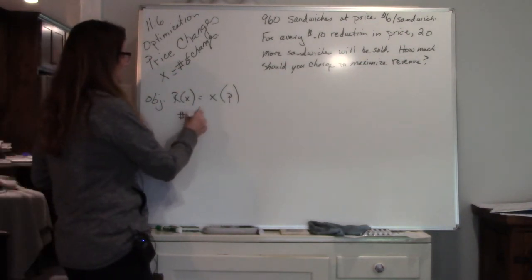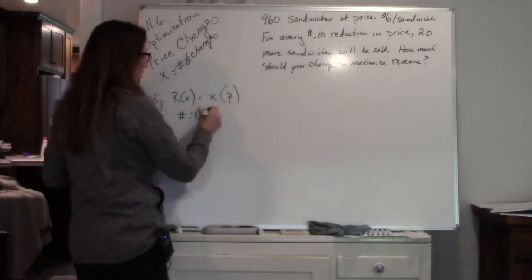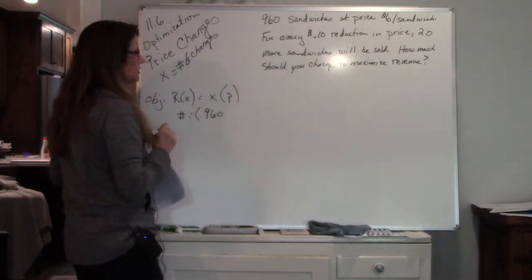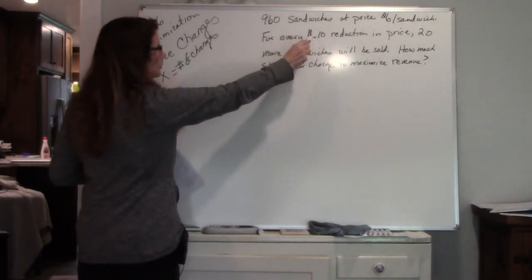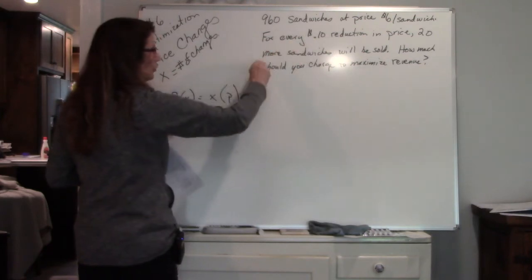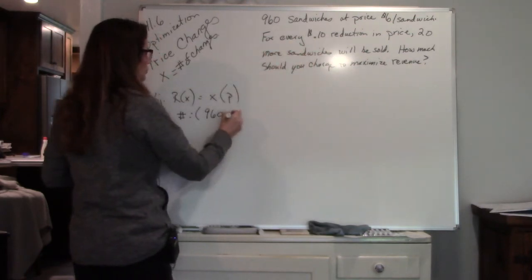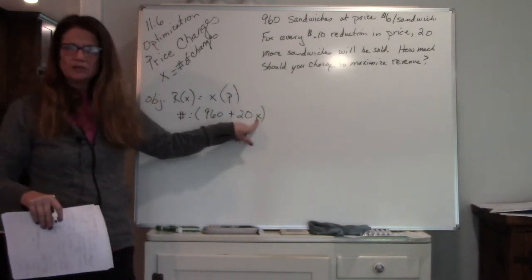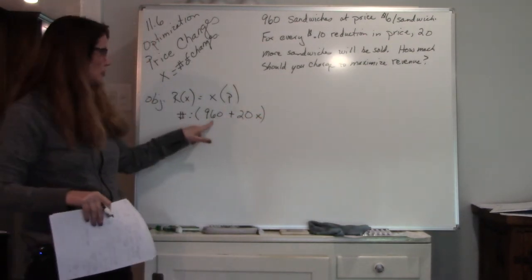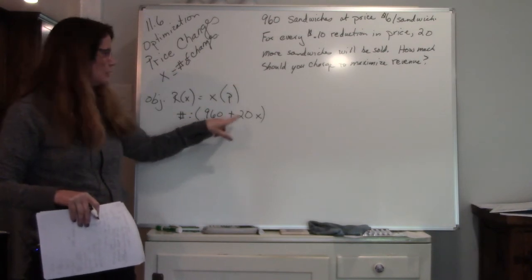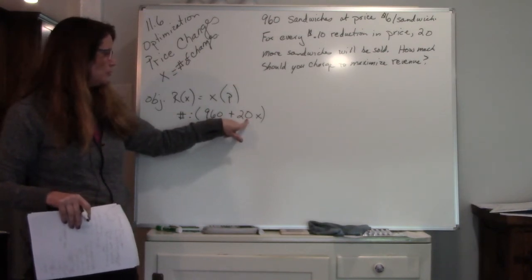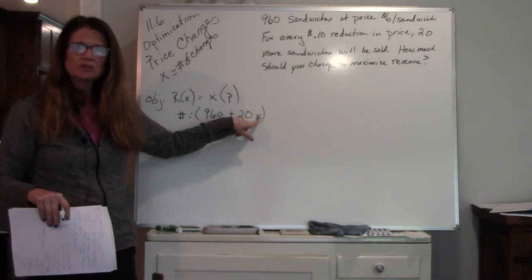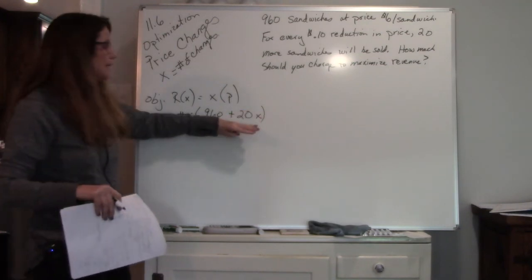So the number equation is, we started with 960 sandwiches, and when we reduce the price, 20 more sandwiches are sold. So we're going to add 20 sandwiches for every price change. So we started with 960. We're going to add 20 more sandwiches for every time we change the price. That's your number equation.